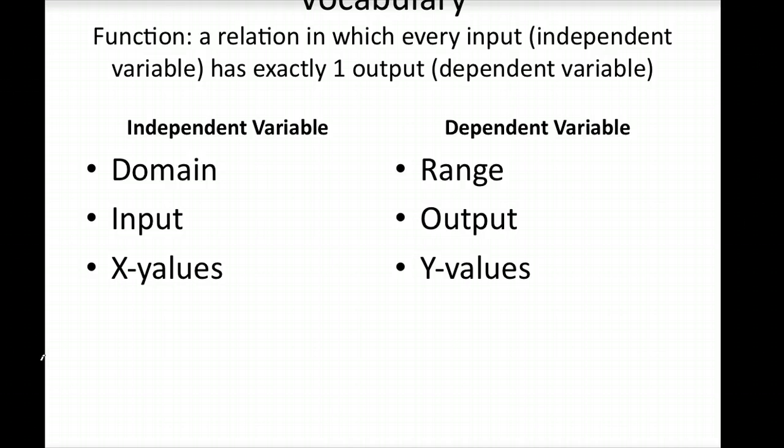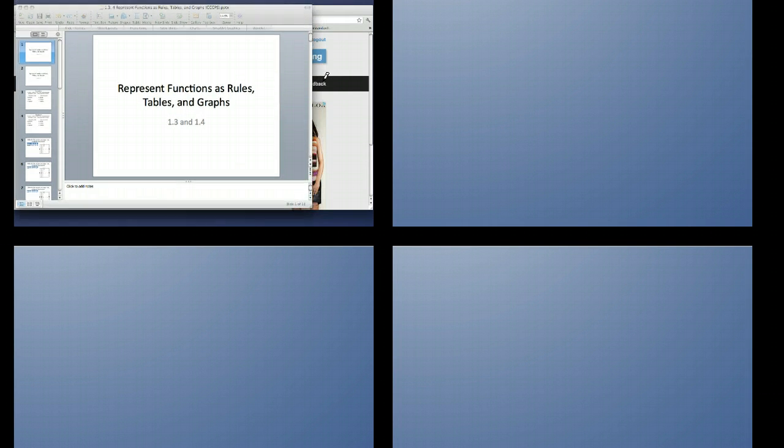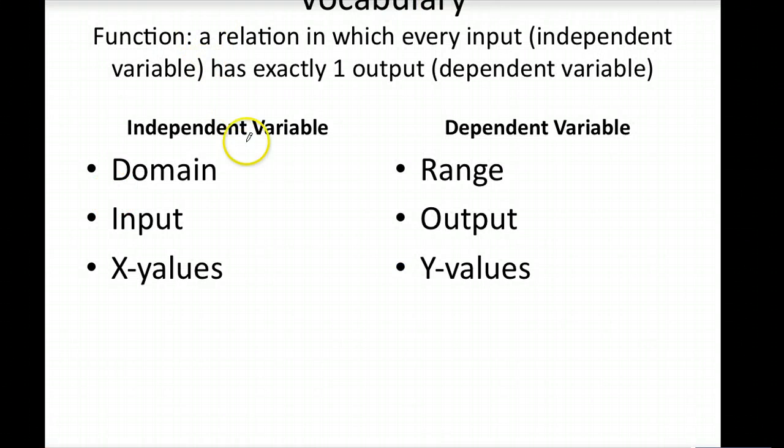Now, an independent variable, we've looked at that for a few days. Just more clarification and some more synonyms for that. When we're looking at independent variables, we also refer to that as our domain, and its match for a dependent variable, we call it our range.